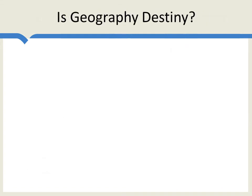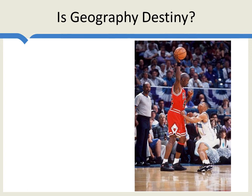So, is geography destiny? No, it is not — but geography does matter. I like to think about it this way: the guy on the right is Tyrone 'Muggsy' Bogues. He was 5'3", played 10 seasons in the NBA, and yes, he could dunk. Is it impossible for a 5'3" player to make it in the NBA? No. Do we see a lot of short players in the NBA? No. Muggsy was able to overcome his inherent disadvantages and play at an incredibly high level.